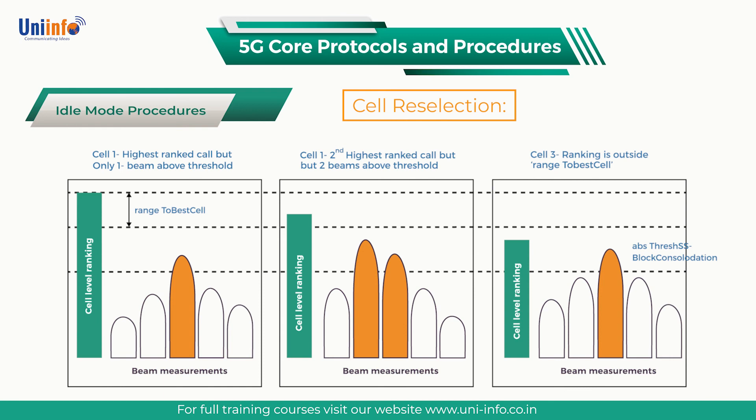For example, as illustrated in the figure, cell 2 is categorised as the best cell because its ranking is greater than the range to best cell threshold and it has 2 beams which exceed ABS threshold SS blocks consolidation.